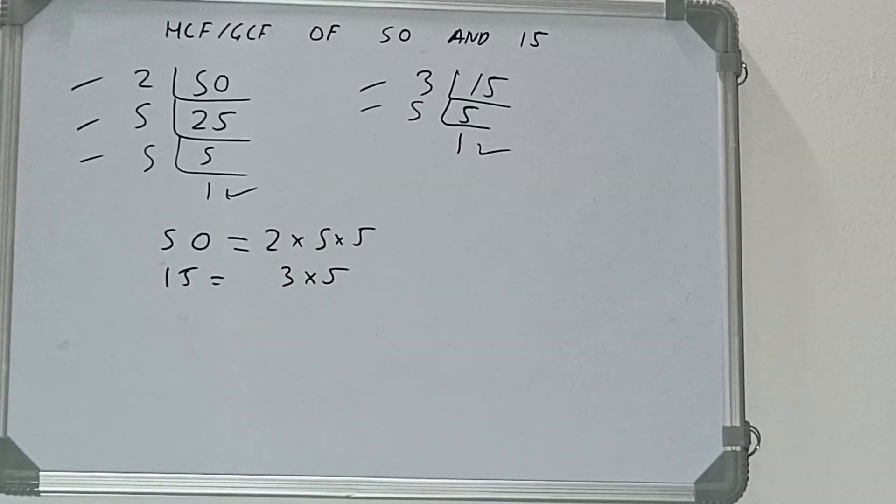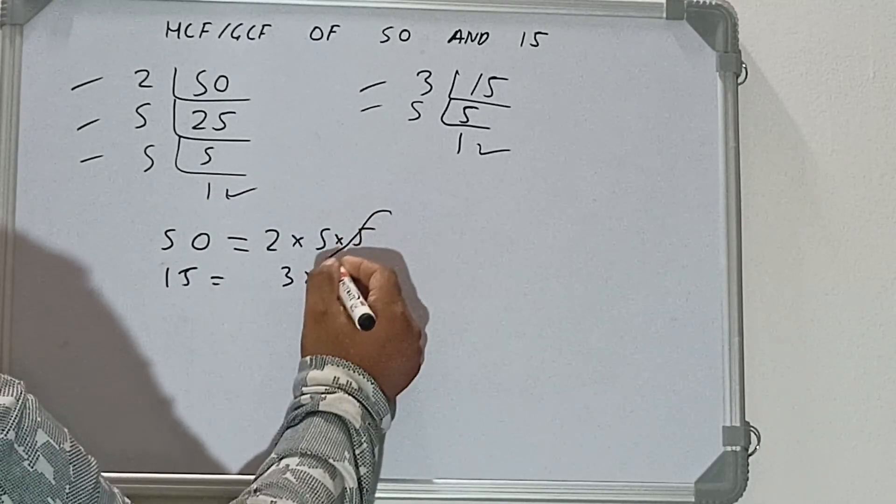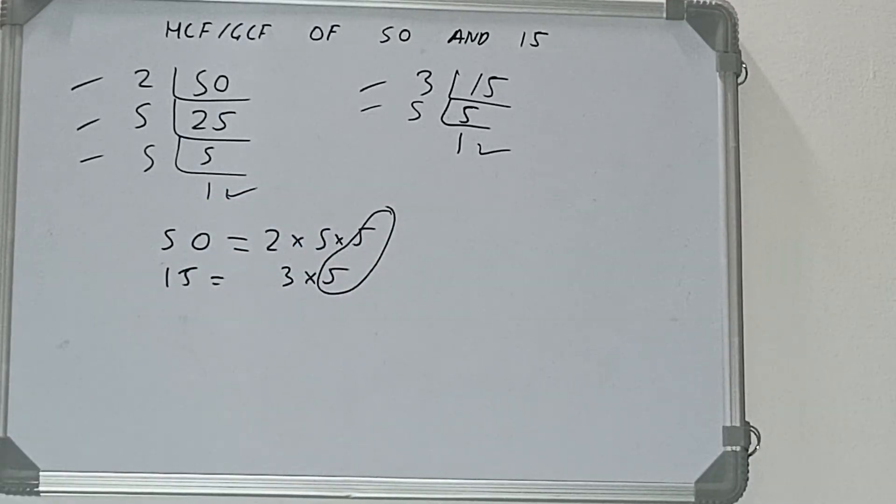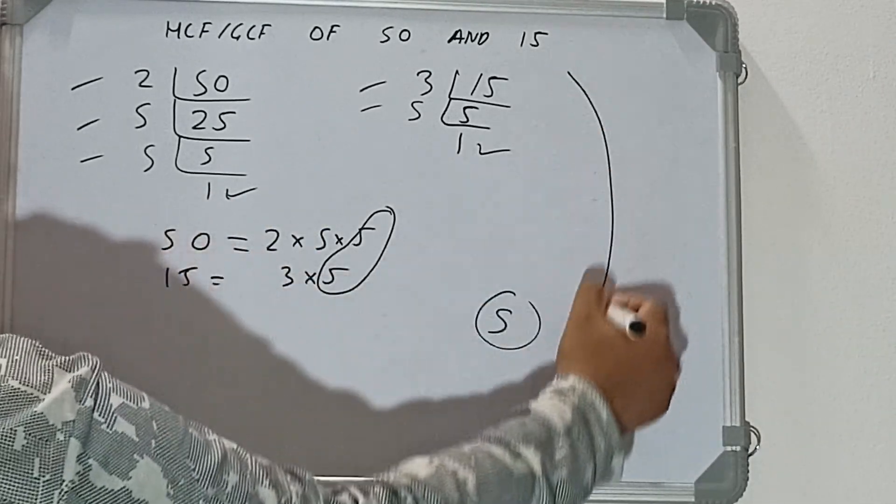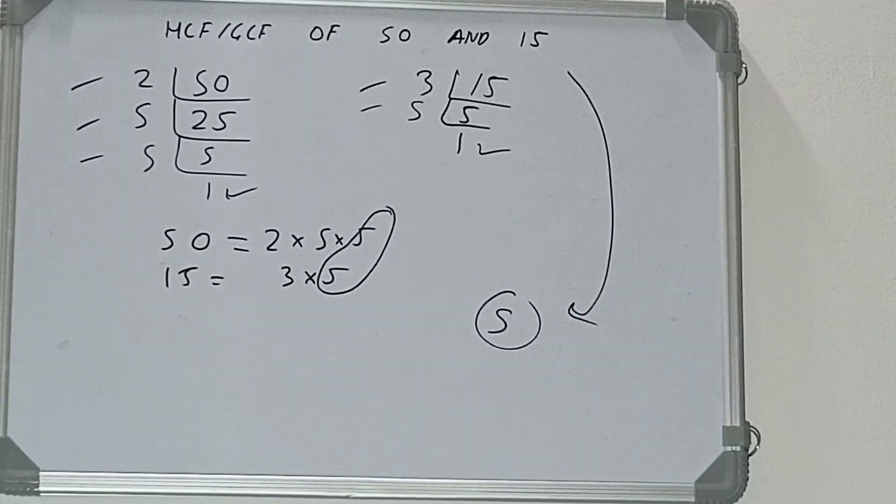Do we have any extra factors in common? No. So the answer will be 5. We can say that the HCF of the numbers 50 and 15 is 5.